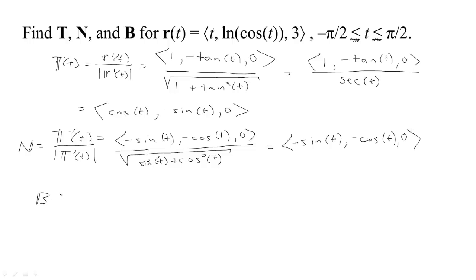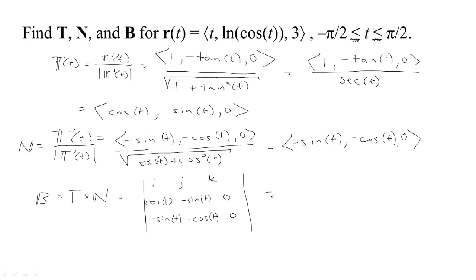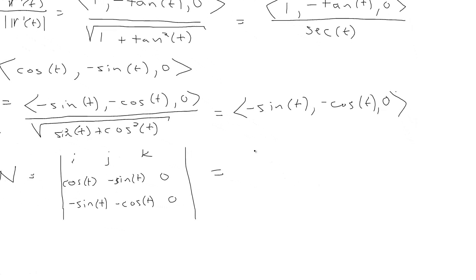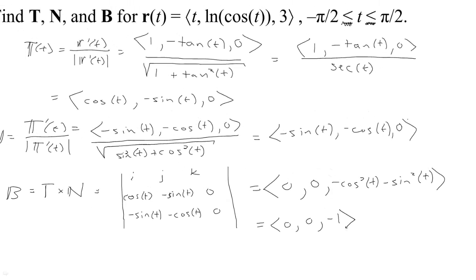Now the binormal is T cross N. We put these into a determinant to calculate the cross product. T is (cosine t, minus sine t, 0) and N is (minus sine t, minus cosine t, 0). The i component is 0 minus 0, the j component is 0 minus 0, and the k component is minus cosine squared t minus sine squared t, which equals negative 1. So our binormal B is (0, 0, negative 1).